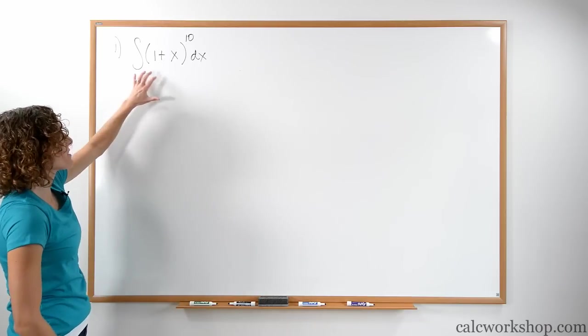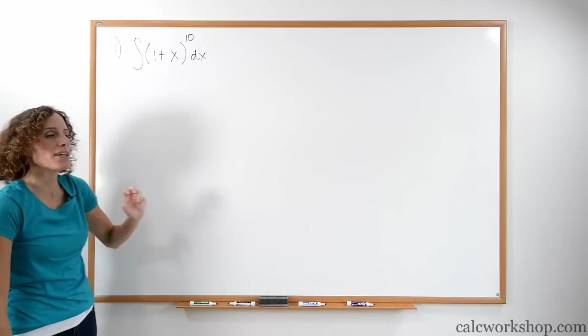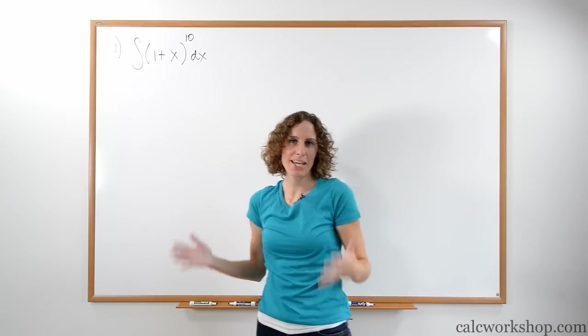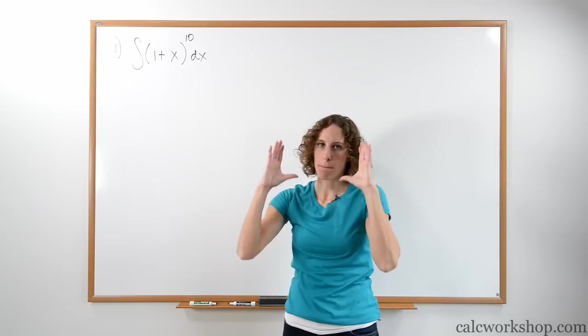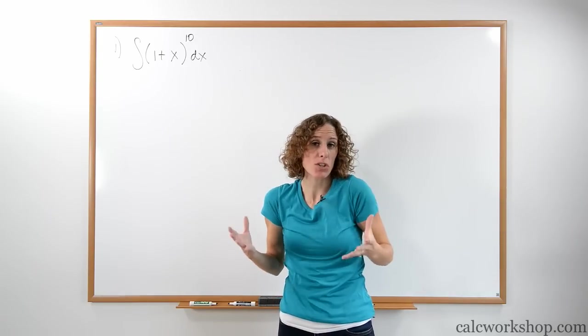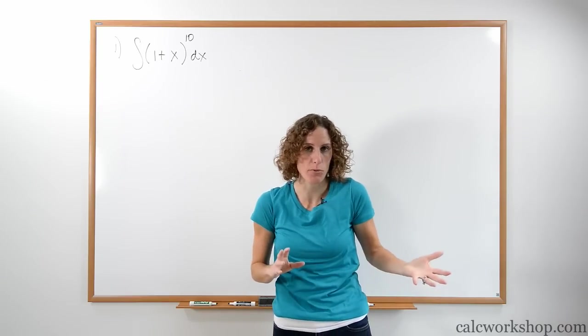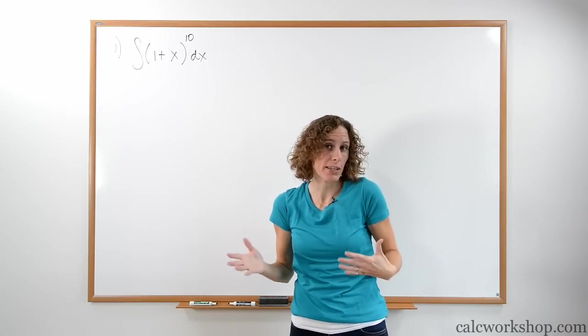All right, we have the integral of one plus x to the tenth. Now, we don't have a technique that handles binomials raised to an exponent. This looks like a chain rule. We would have to bring the ten down, decrease it by one, and multiply by the derivative of the inside if we were looking at a derivative.